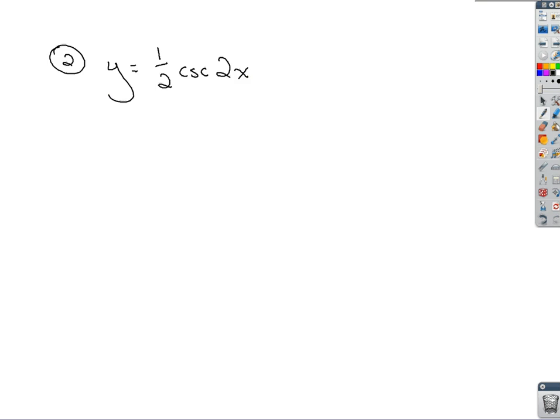All right, so we're graphing one period for cosecant. We know the reciprocal of cosecant is sine. So we're using what we know about a sine graph here as guidance. Go through as we did before. Find your amplitude, your period, your horizontal shift, and your vertical shift.